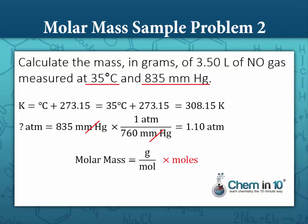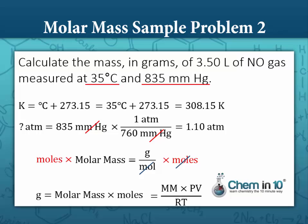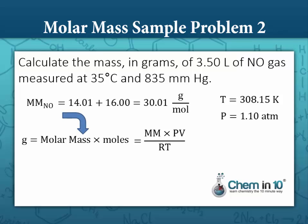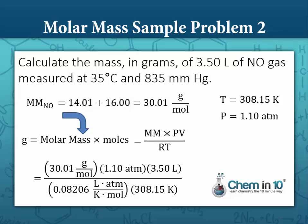Molar mass is grams per mole. Multiplying by moles gives grams, so grams equals molar mass times moles, and moles from the ideal gas law is PV over RT. The molar mass of nitrogen monoxide is 14.01 plus 16.00 equals 30.01 grams per mole. So: 30.01 g/mol times 1.10 atm times 3.50 liters, divided by 0.08206 L·atm/k-mol times 308.15 K — canceling units, our answer is 4.57 grams.